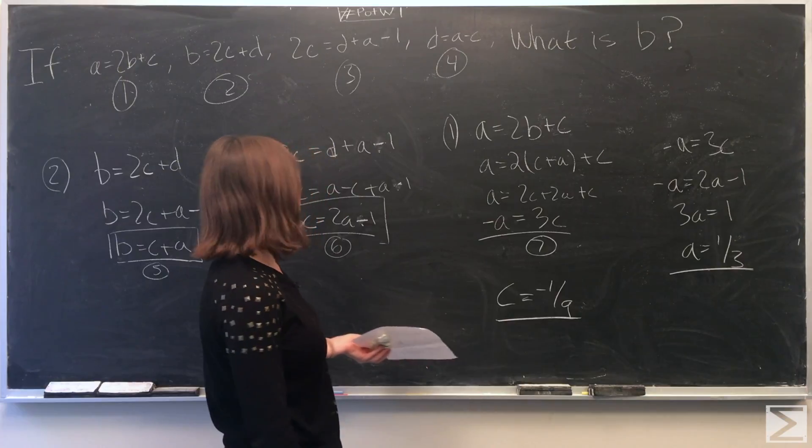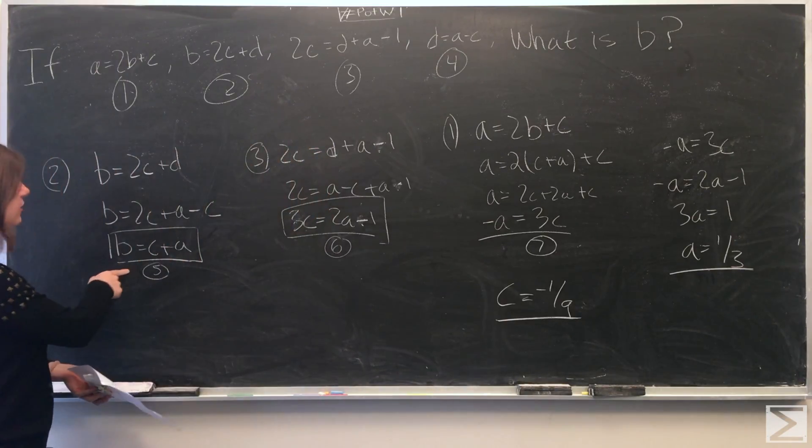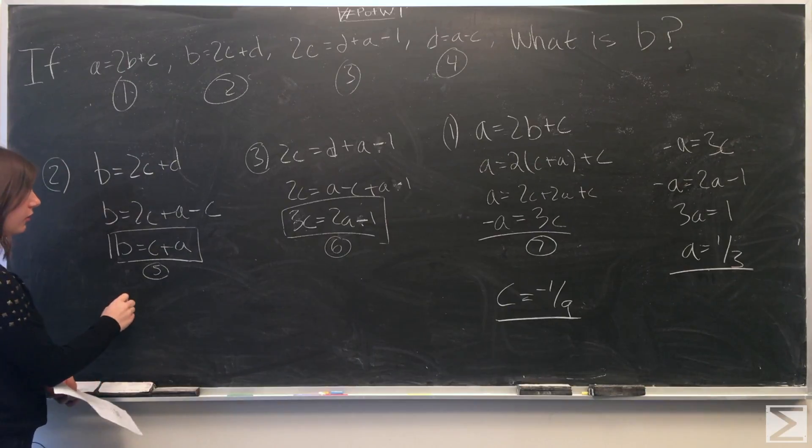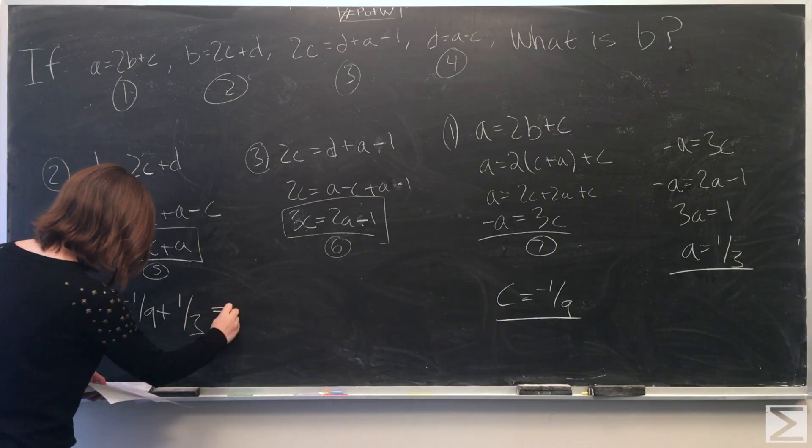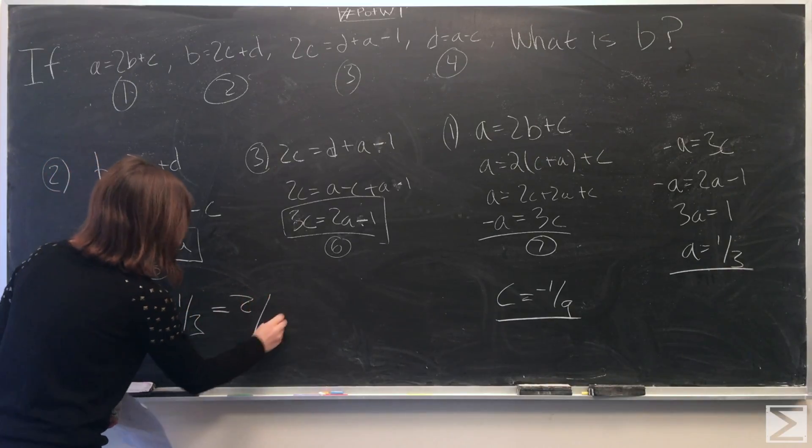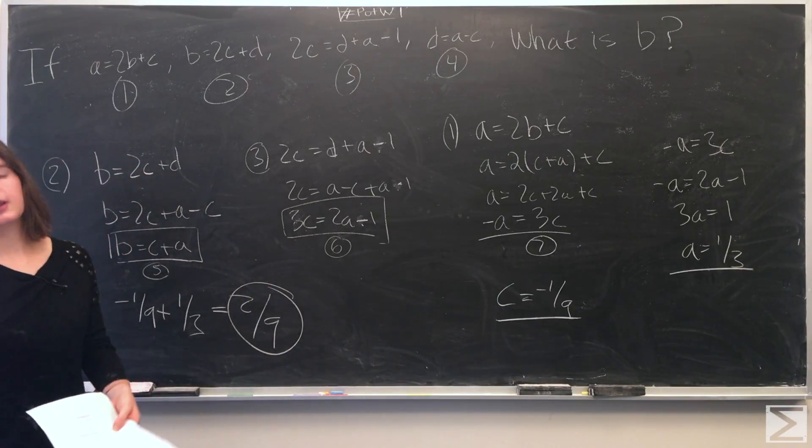And now we know a and c, we still don't know b. We have b equals c plus a. So negative one-ninth plus one-third, b equals two-ninths.